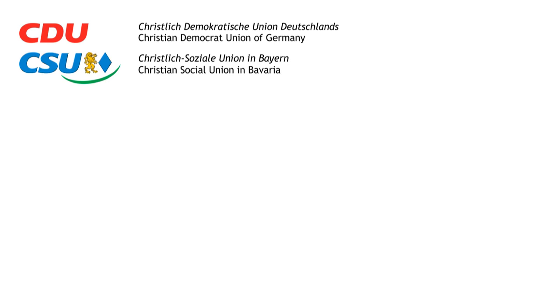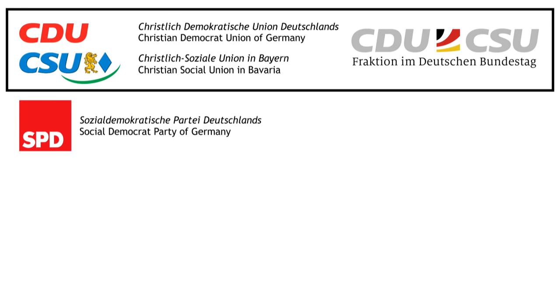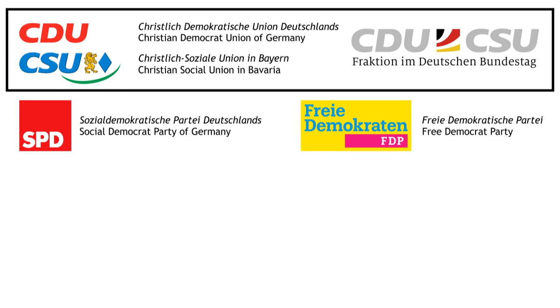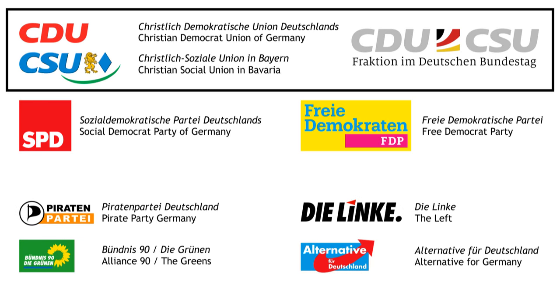It's the Bundestag that's being elected, and therefore indirectly also the chancellor. Traditionally, the main parties are the CSU in Bavaria and the CDU in the rest of Germany, which together make up the so-called Union, the SPD, and the FDP. There are also several smaller parties, including the AfD.